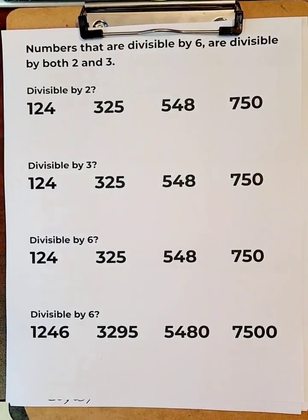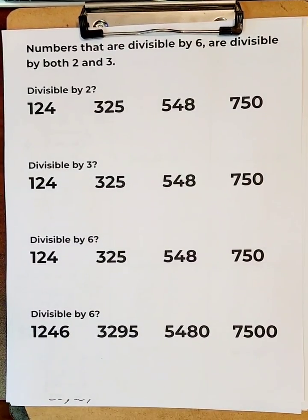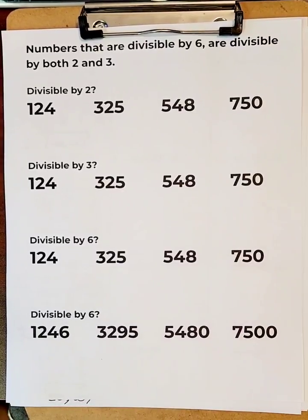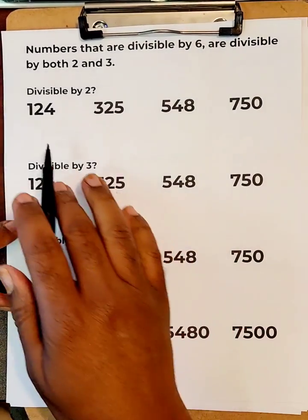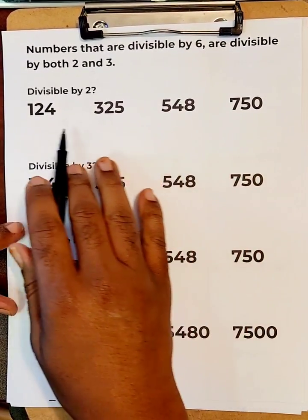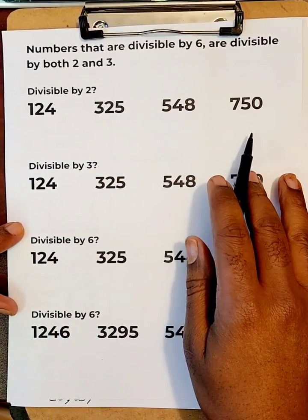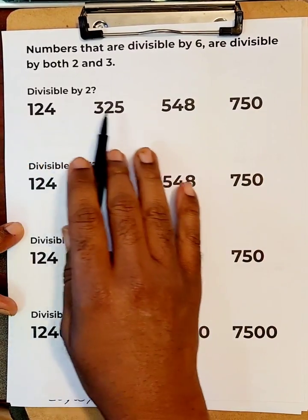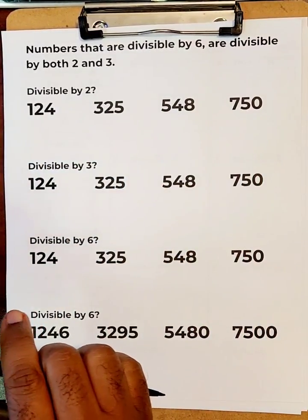Numbers that are divisible by six are divisible by both two and three. So the question is, which of these numbers do you think are divisible by two? Name either the first, second, third, or fourth.